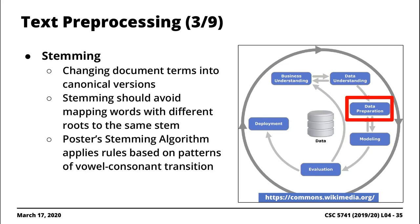Stemming essentially involves converting all different derived words into their root form. For example, 'woman' and 'women' stem to the same root; 'men' and 'man' are the same; 'female' and 'females' are the same; 'Zambia' and 'Zambians' are the same — you reduce them to a common stem. The idea is to reduce the size of the resulting vector you'll be working with, since when working with text the resulting matrix can be really large. The Porter Stemmer happens to be one of the most widely used stemming algorithms and is quite easy to use in Python.